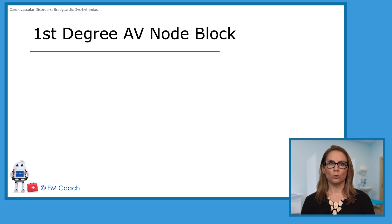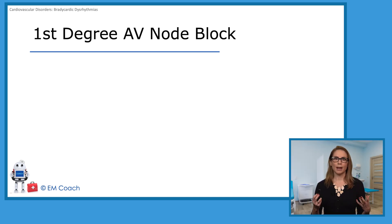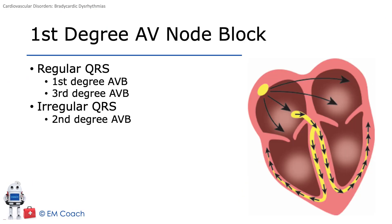A first-degree AV nodal block. Let's first talk about, in general, the AV node. Here's our conduction pathway again. Impulses start at the SA node, go through the atria, then get to the gatekeeper, which is the AV node, which causes a little pause and then conducts it through the Purkinje system and the bundle of His.